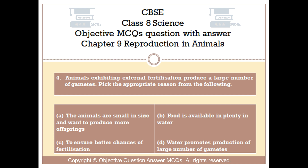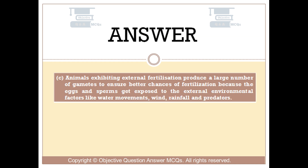The right answer is Option C. Animals exhibiting external fertilization produce a large number of gametes to ensure better chances of fertilization, because the eggs and sperms get exposed to external environmental factors like water movements, wind, rainfall, and predators.